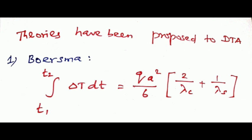2 by lambda c plus 1 by lambda s, where lambda c is the thermal conductivity of the ceramic material, lambda s is thermal conductivity of the sample, a is the radius of the hole, and Q is the heat transfer transformation.